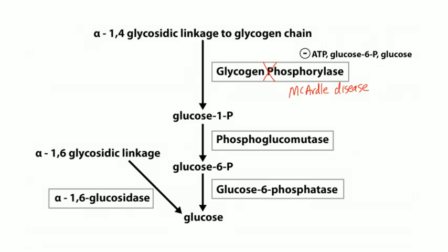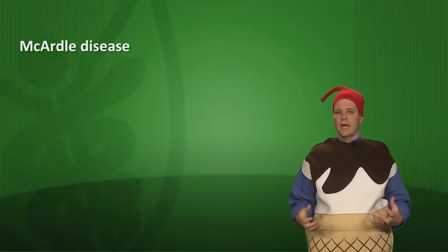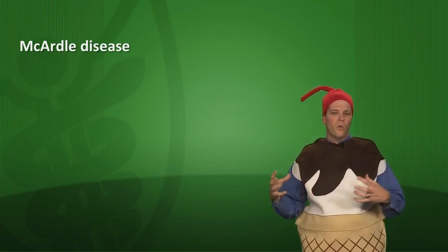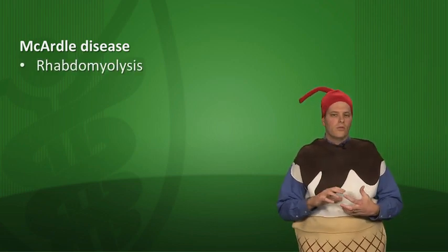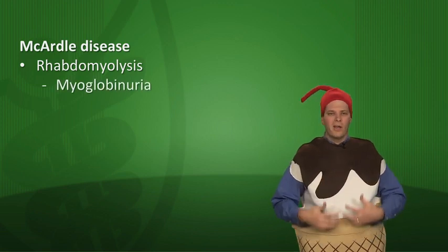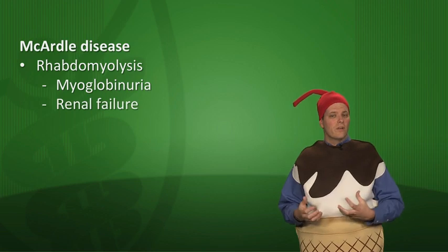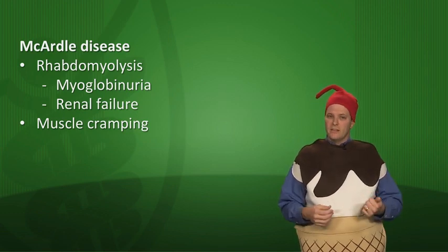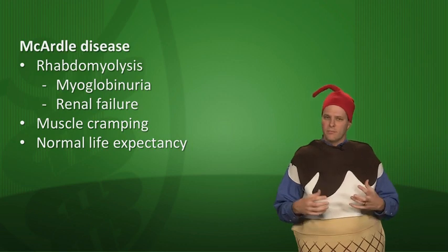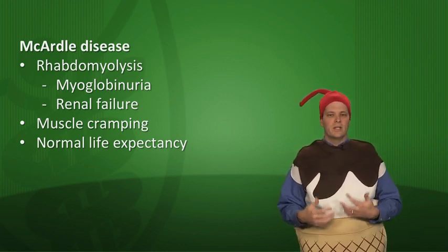With McArdle disease, excess glycogen accumulates in muscle because all the enzymes that make glycogen are intact but you can't break down the alpha-1,4 linkages. Muscle cells fill up with glycogen, osmotic pressure draws water in, cells swell and lyse. When they lyse, myoglobin spills into the serum — rhabdomyolysis. That myoglobin causes myoglobinuria and can clog the kidneys causing renal failure. Patients also have muscle cramping, but they have a normal life expectancy.